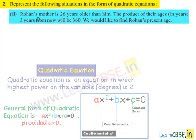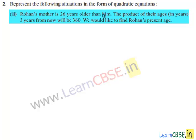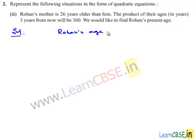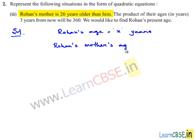Coming to the third bit: Rohan's mother is 26 years older than him. The product of their ages in years, 3 years from now, will be 360. We would like to find Rohan's present age. Assume Rohan's age is equal to x years. Since Rohan's mother is 26 years older than him, Rohan's mother's age is equal to x plus 26 years.